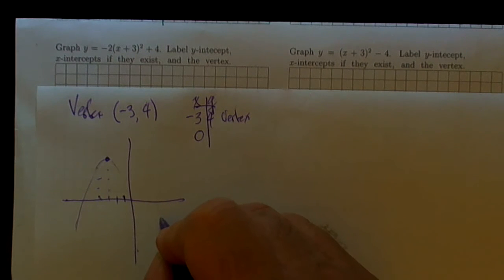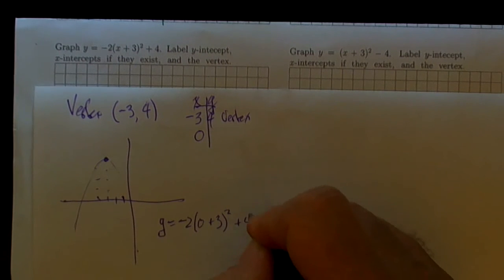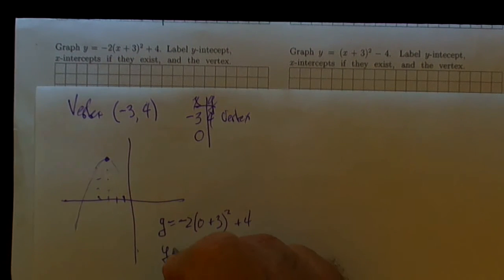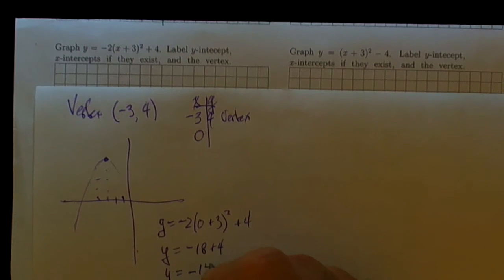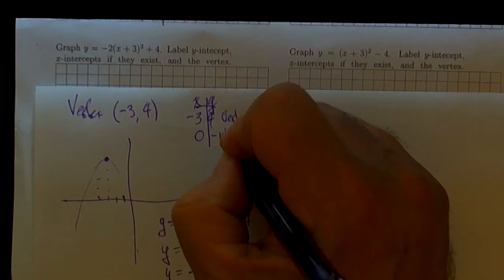So that's just a matter of doing a little bit of calculation. y is going to be negative 2 times 0 plus 3 quantity squared plus 4. So y has got to be, well, 0 plus 3 is 3, squared is 9, minus 18 plus 4. So y is equal to minus 14. So 0, minus 14 happens to be the y-intercept.